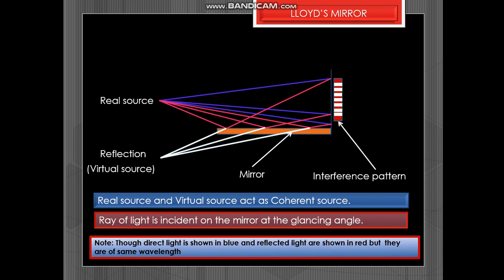So the ray of light is incident on the mirror at the glancing angle then we get the interference pattern. But note though the direct light is shown blue and the reflected light is also shown in red, but they are having the same wavelength.